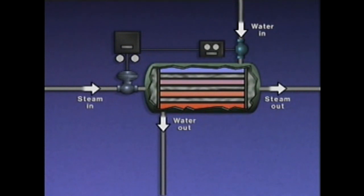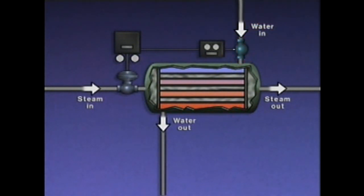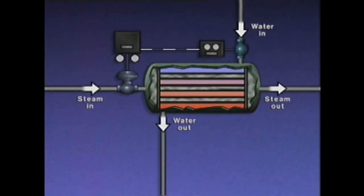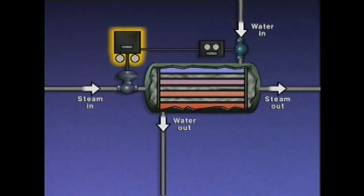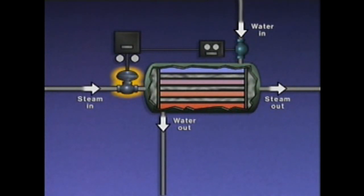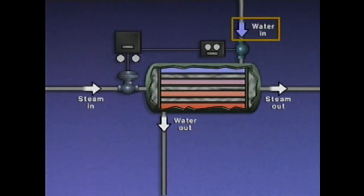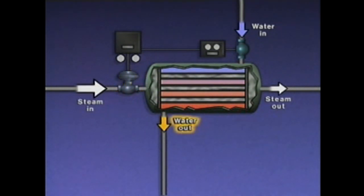The feed-forward control system works like this: if the temperature of the water entering the heater changes, the primary element — a temperature sensing bulb — detects the change and alters the signal sent to a transmitter. The transmitter sends a proportional signal to a controller, which compares it to set point. If there's a difference, the controller sends a signal to the control valve to open or close to change the steam flow. If the inlet water temperature decreases, the valve opens to increase steam flow, providing more heat and preventing the outlet water temperature from dropping below its desired value.